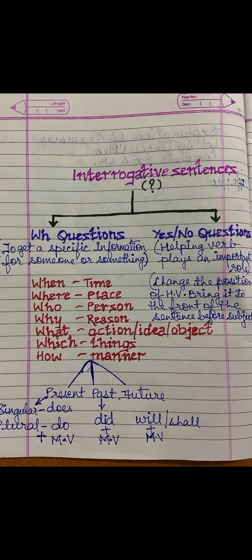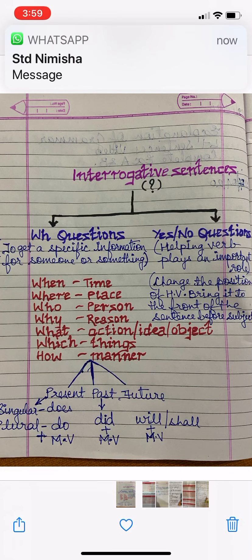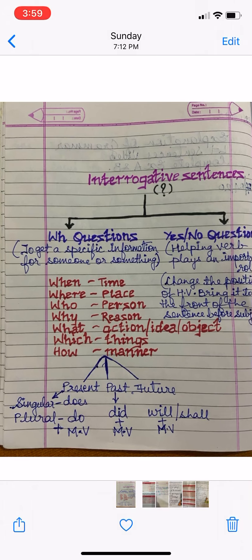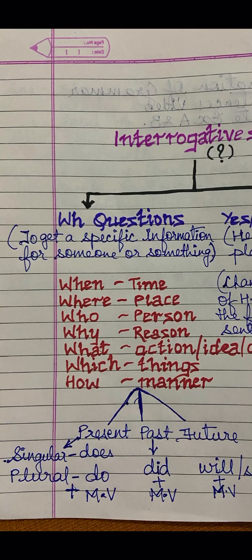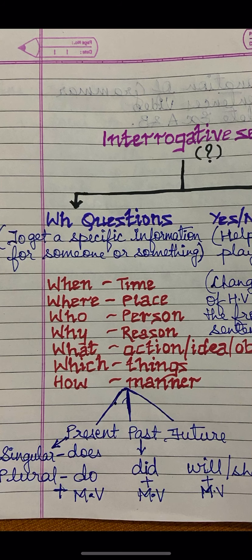What are WH questions? When, where, who, why, what, which, how — these all are WH questions. Remember: whenever we want to know about time, we use WHEN. When we want to know about a place, we use WHERE. When we want to know about a person, we use WHO. When we want to know about any action or idea, we use WHAT. When we want to know a reason, we use WHY. When we want to know about manner, we use HOW. These are called WH questions.